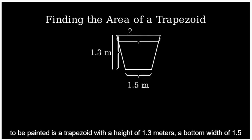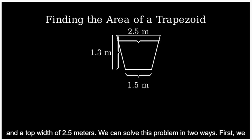The front face that needs to be painted is a trapezoid with a height of 1.3 meters, a bottom width of 1.5 meters, and a top width of 2.5 meters. We can solve this problem in two ways.